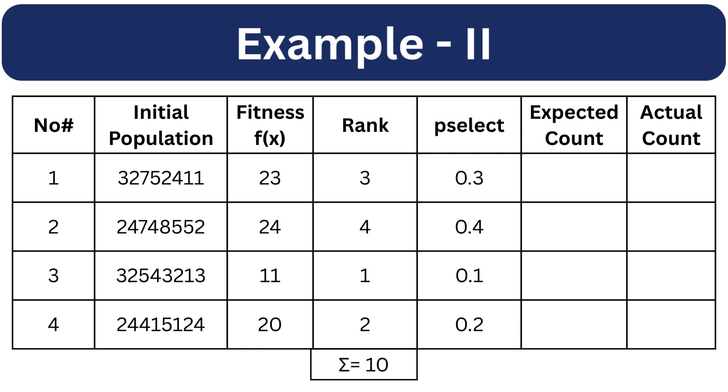The summation of all ranks is equal to 10. Now we will calculate the selection probability based on the fitness value. The formula would be rank divided by the summation of rank. So 3 divided by 10 is 0.3 and the same for the remaining ones.